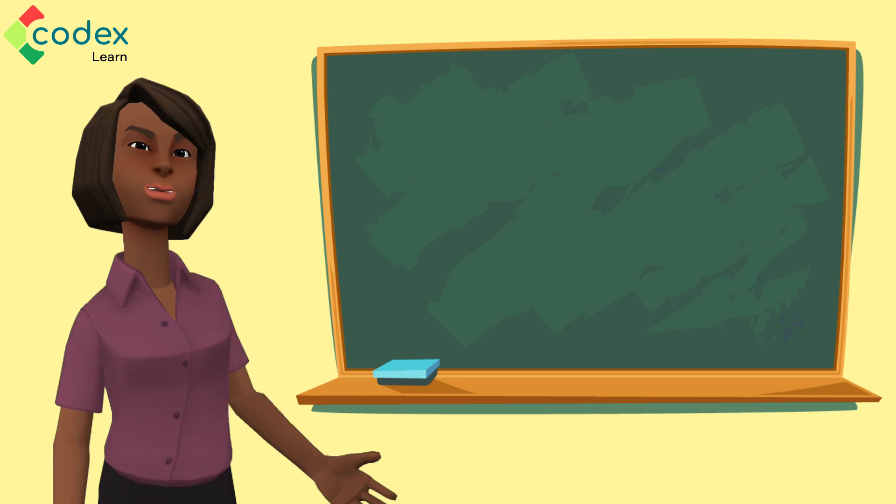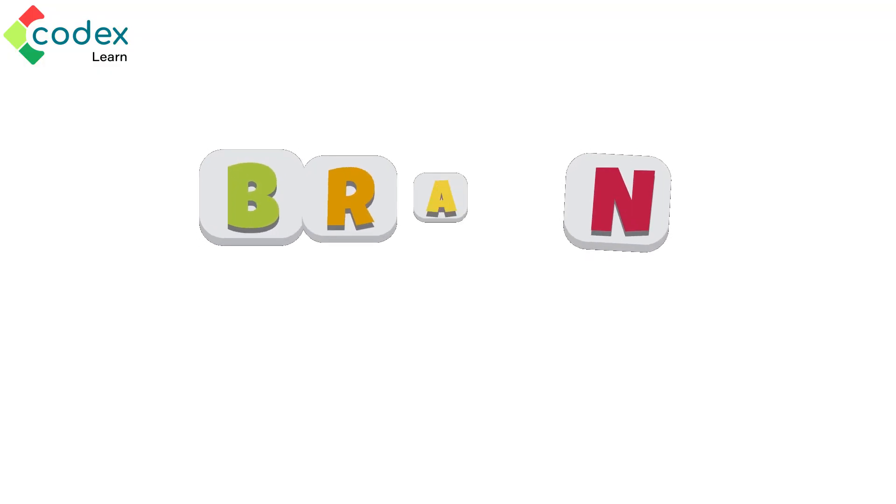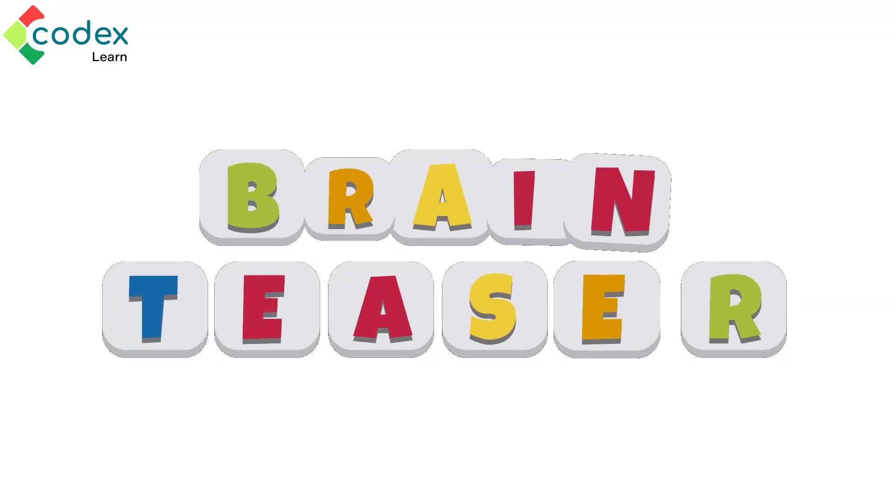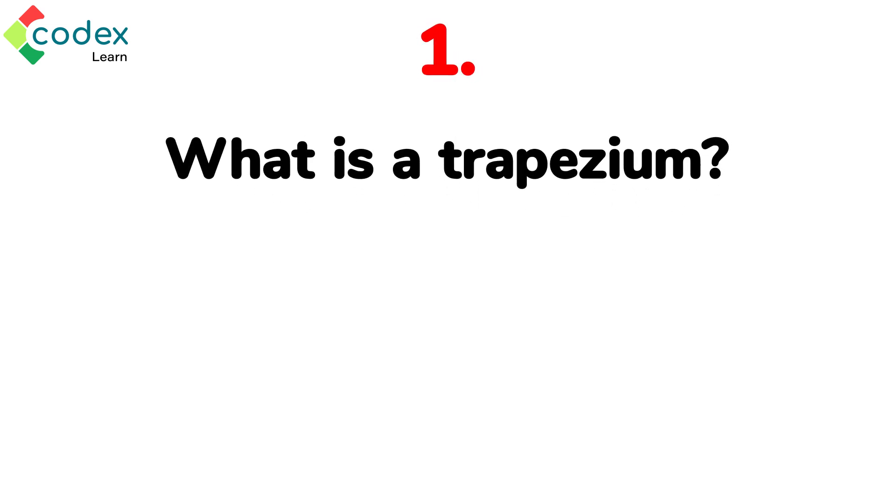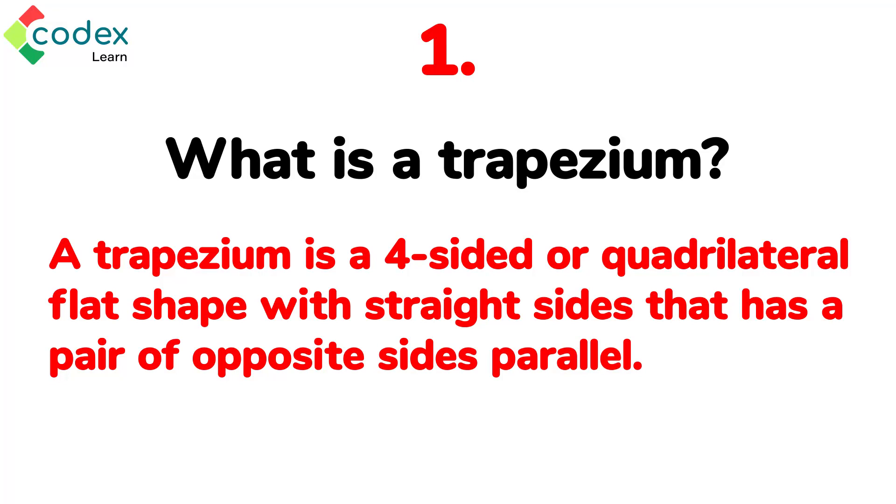But just before we finish up this lesson, let me ask you some questions. They will help you remember things even more. Number one: What is a trapezium? That's correct! A trapezium is a four-sided or quadrilateral flat shape with straight sides that has a pair of opposite sides parallel.